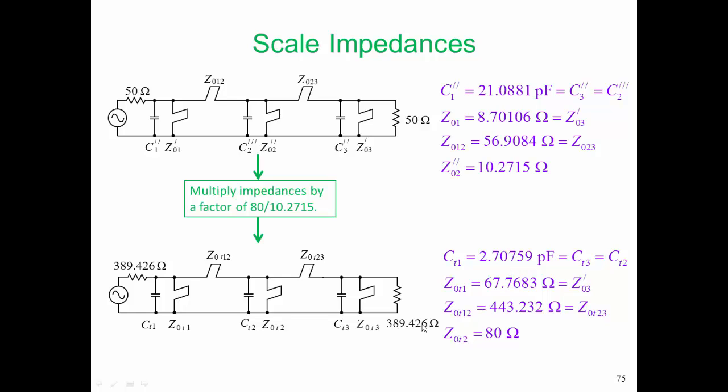Now the central shunt stub has a characteristic impedance of 80 ohm. Of course, that's what we decided to do. One of the consequences of this is now we have rather large source and load impedances.